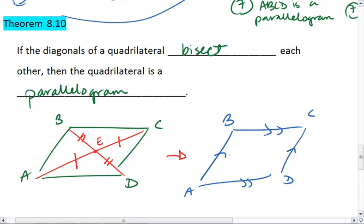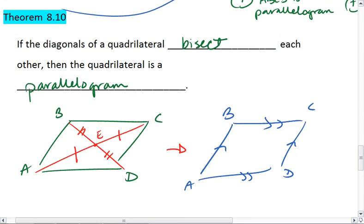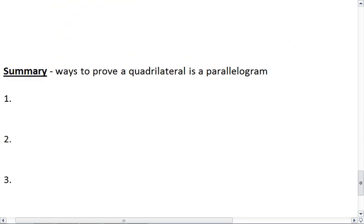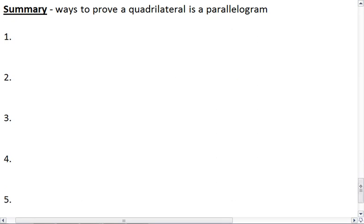And I'll leave that for you to fiddle with the proof if you want to. Here's a little hint: prove these two triangles congruent first, then you can prove these two. This brings us to our summary of ways to prove a quadrilateral is a parallelogram.